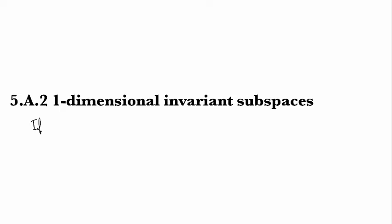If U is a subspace of V with dimension 1, then by the definition of dimension, U is going to be the span of a single nonzero vector.